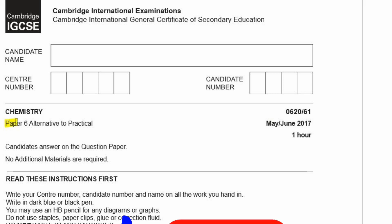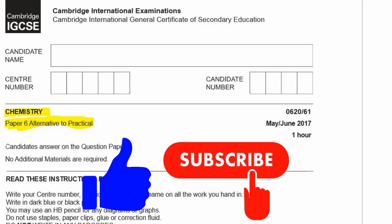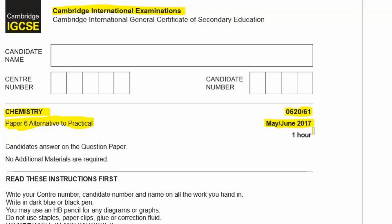Okay, so we're going to go through Paper 6, which is the alternative to the practical for chemistry. This is IGCSE from Cambridge International Examination, CIE, from May June 2017, Variant 1, 0620-61. All right, let's begin.